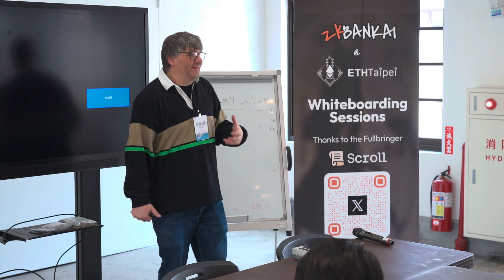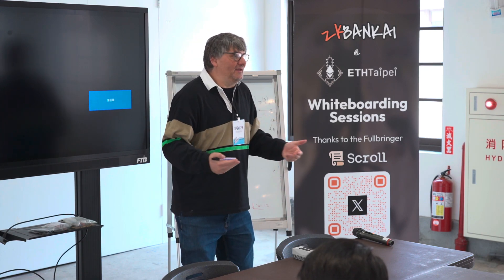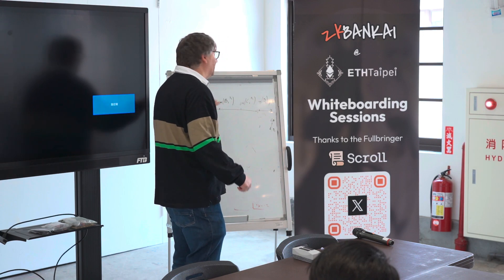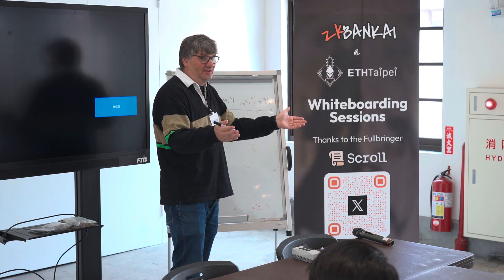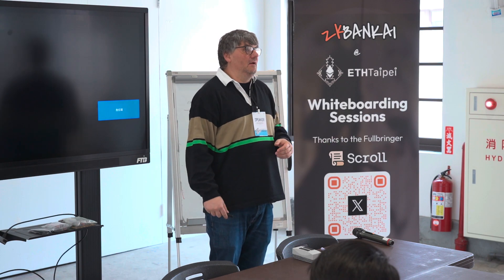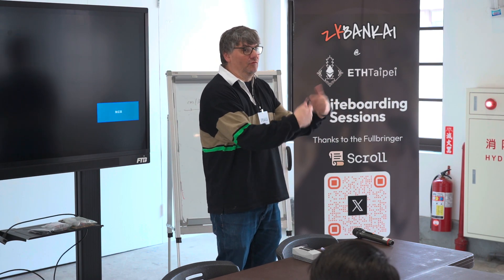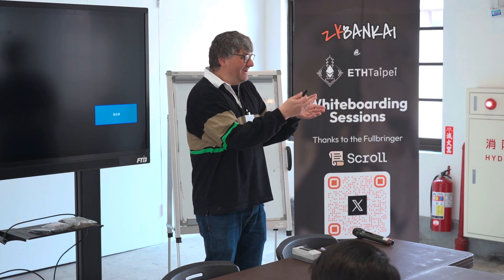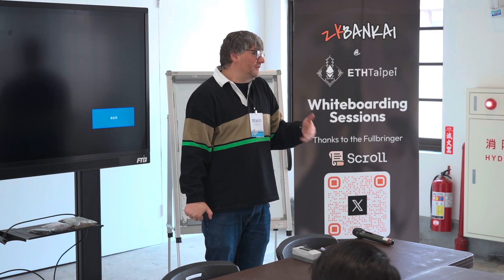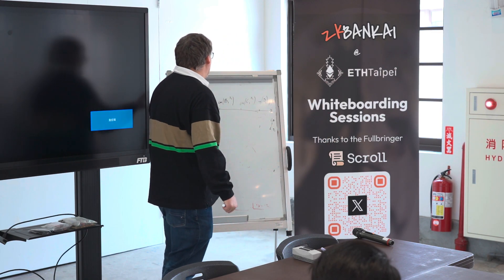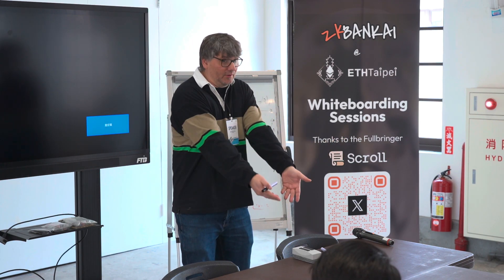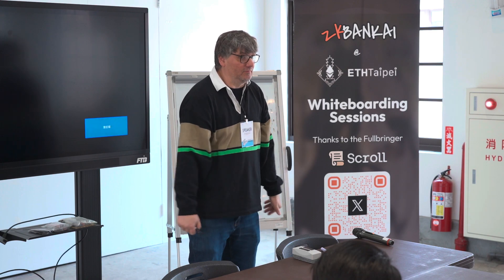What does it mean to be able to build the proof? Maybe it's because you already have the proof — the proof was already generated by the other chain and you just receive it. Or maybe you have a full node of the chain and you can generate it yourself. This means that if chain A is a validium, you also need the data availability of the validium, because you need to be able to build the proof.